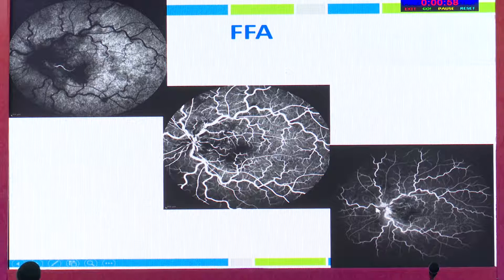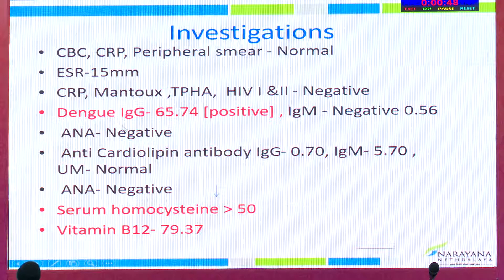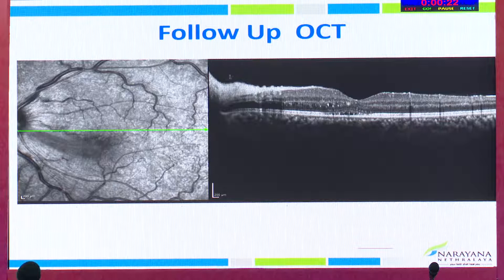FFA showed early hypo with late persistence of hypo, staining of the lesions, perivascular leak, and staining of the vessels. When we ordered investigations, dengue IgG came positive; autoimmune workup was all negative. Because this patient had a vascular impending occlusion, serum homocysteine was also ordered, which was elevated, associated with vitamin B12 deficiency. The patient was put on systemic steroids, and folate for hyperhomocysteinemia, along with vitamin B12 supplements. Once we corrected all of this, we could see resolving lesions. The patient had complete resolution with improvement in visual acuity to 6/6 on long-term follow-up.